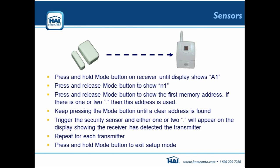The N1 setting is a mode. There are four different modes: one gives you 64 discrete zones with 64 different sensors; another allows 16 zones with four sensors per zone; and there are other combinations. All the N1 to N4 modes are documented in the wireless receiver data sheet — one thing that's very good about HAI products is the really good data sheets that come with every product.